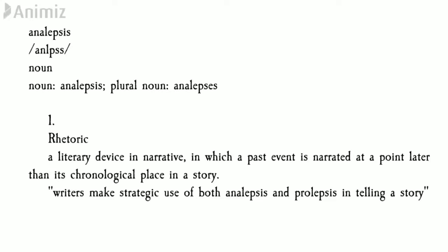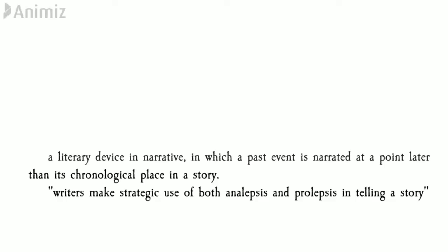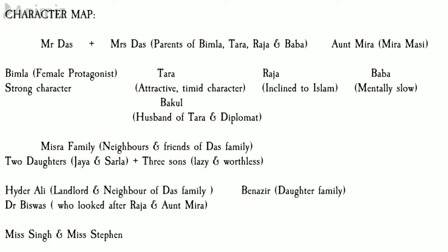As is the tradition of our channel, let us first discuss the characters of this novel. The novel is divided into four untitled parts, and to understand the gist of the story we must understand the characters first. Our female protagonist is Vimla Das — I'll be calling her Bim throughout, as she is popularly known that way. You can see the character map on screen which I have made for you, to help you remember them in chronological fashion. Vimla Das is the female protagonist and elder sister of the Das household, who lives in Old Delhi.